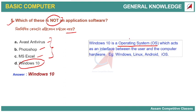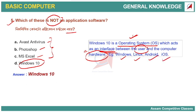What is the operating system? It is the interface between the user and computer hardware. Other examples of the operating system include Windows, Linux, Android, and iOS — these are different types of operating systems.